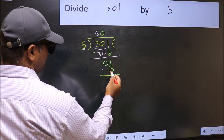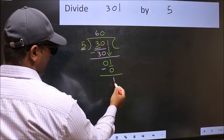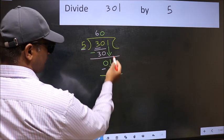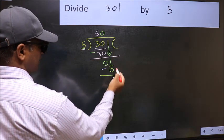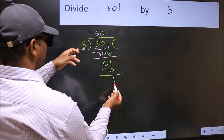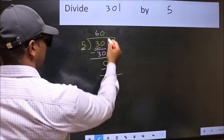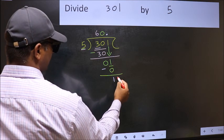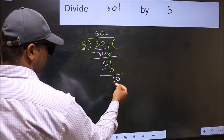Now you should subtract. 1 minus 0, 1. Over here, we did not bring any number down, and 1 is smaller than 5. So now you can put dot and take 0. So, 10.